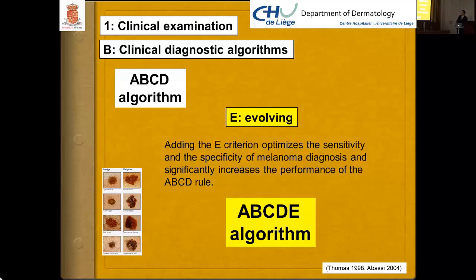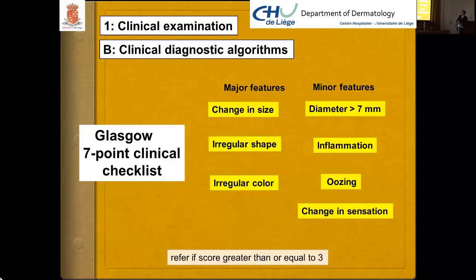The Glasgow 7-point clinical checklist is based on major features — change in size, irregular shape, irregular color — and minor features: diameter over 7 mm, inflammation, oozing, and change in sensation. The requirement is to refer to a dermatologist if the score is greater than or equal to 3.